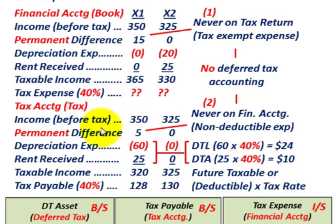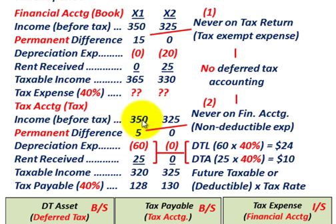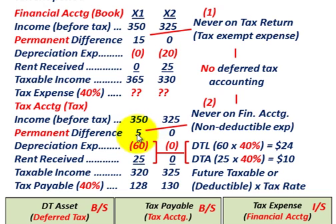Let's look at how we're going to come up with our taxes payable. For tax accounting purposes, we have our $350,000 of income before taxes. We add in the permanent difference of $5,000 — it's like a non-deductible expense, so we add it back. The $15,000 financial accounting permanent difference does not come into play here for tax purposes. Then we subtract the extra depreciation expense of $60,000 and add back the rent received in advance of $25,000, giving us taxable income of $320,000.